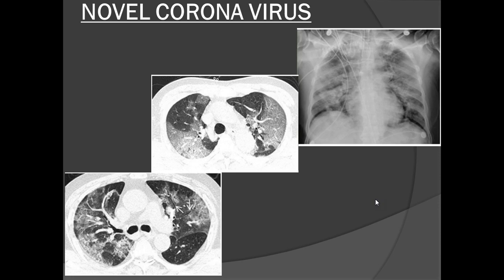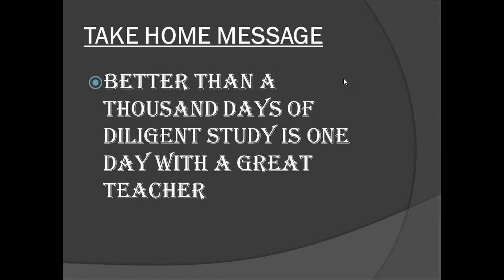Finally, novel coronavirus (COVID-19): in the current pandemic situation, chest X-ray typically shows multifocal consolidations in a peripheral and posterior distribution. The posterior and peripheral predominance of these consolidations is the classic appearance of COVID-19 pneumonia.